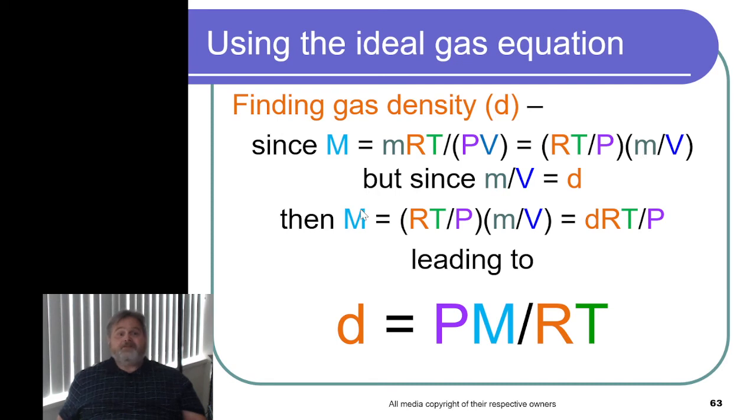So I'm going to replace that. And so the molar mass is density times RT divided by P, which if we rearrange will give us the fact that the density is the pressure times the molar mass divided by RT.